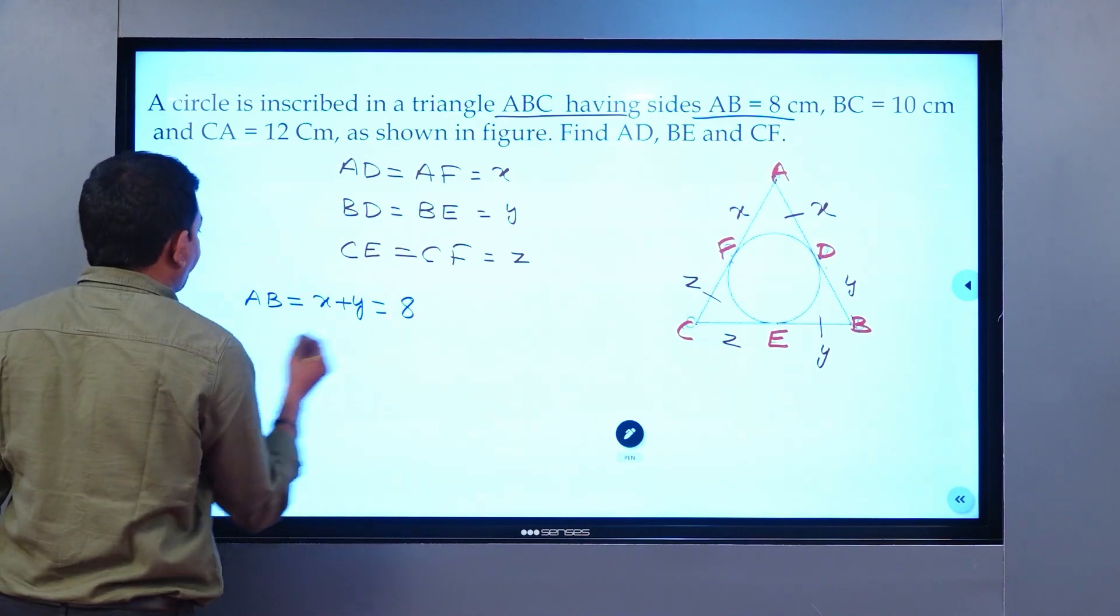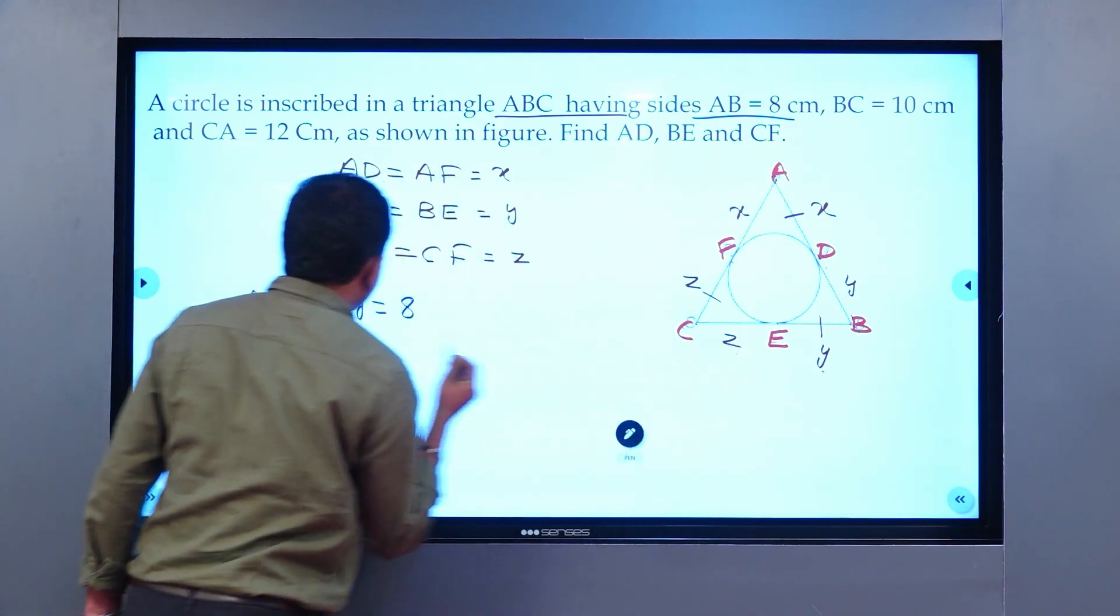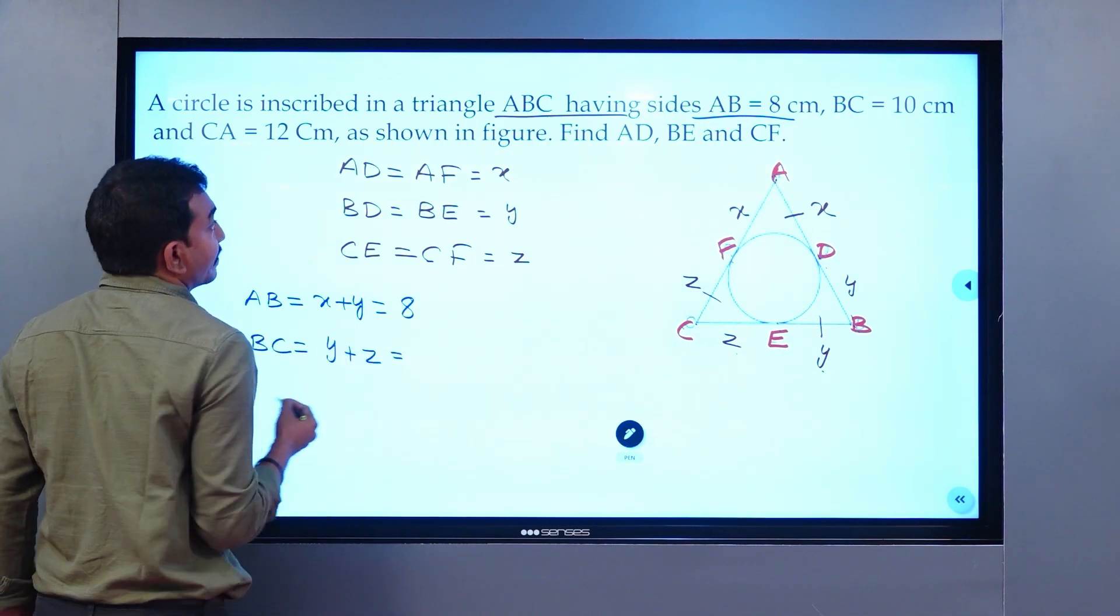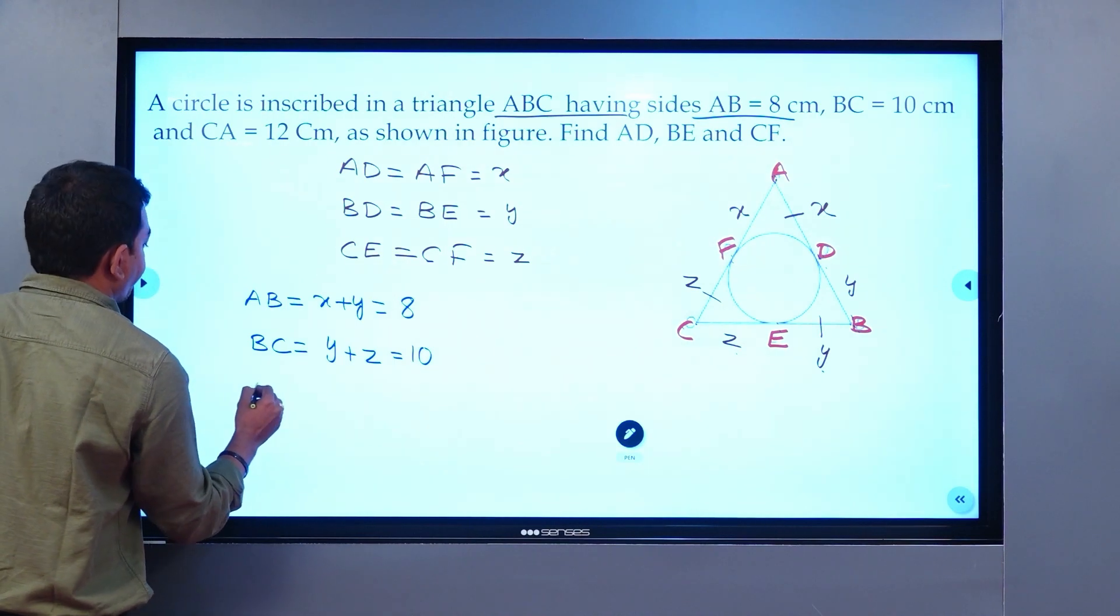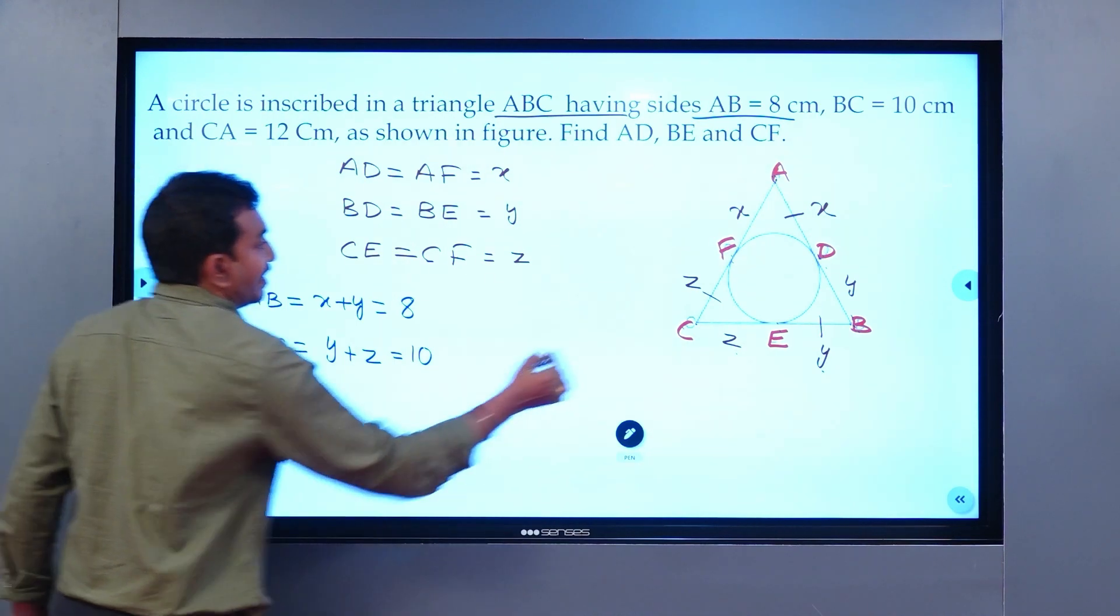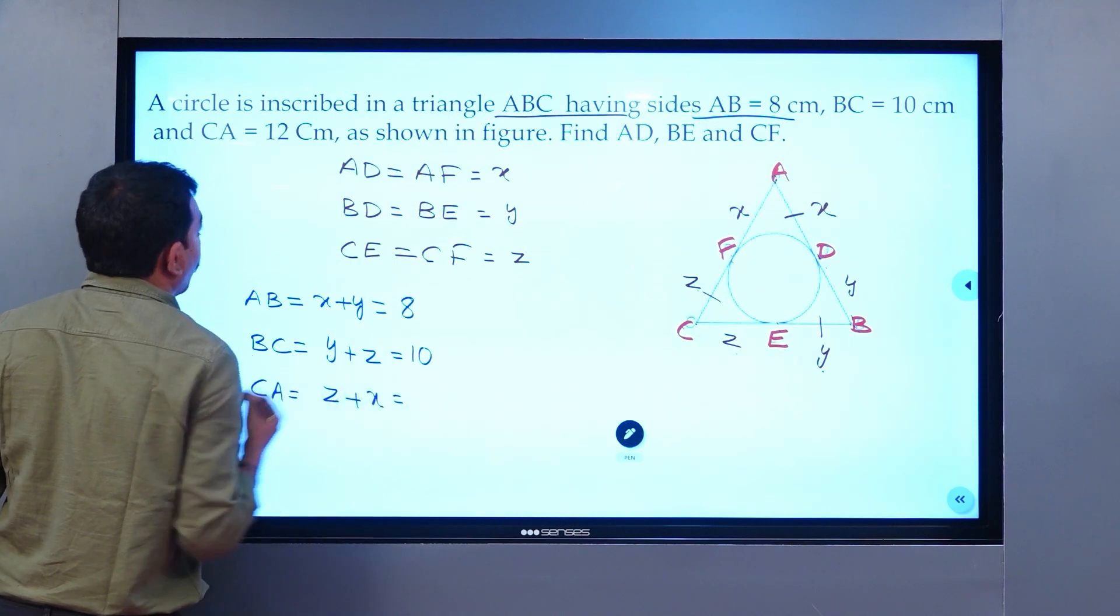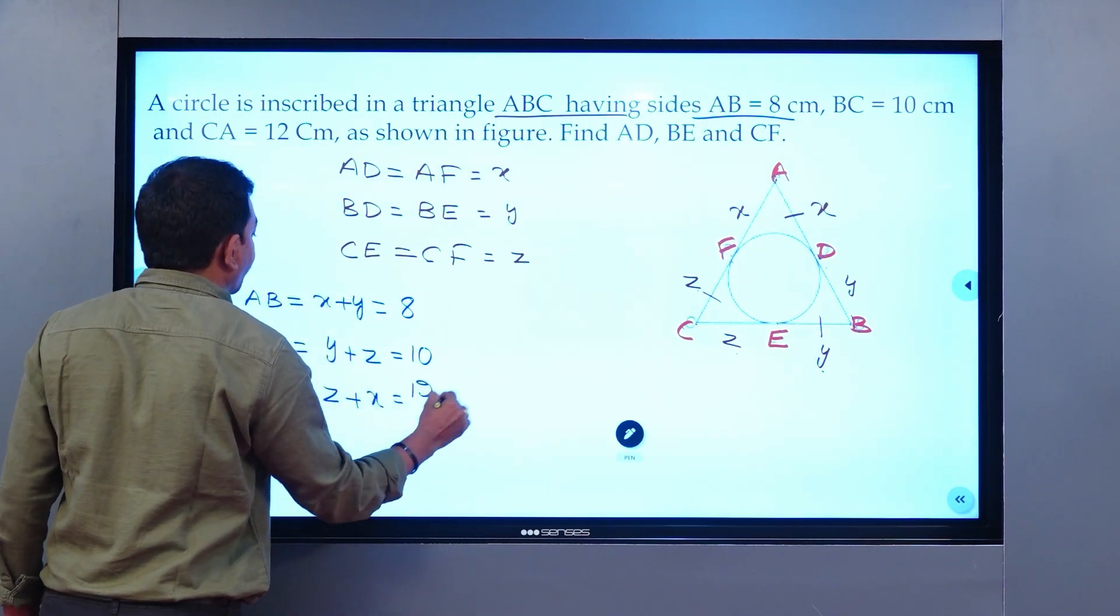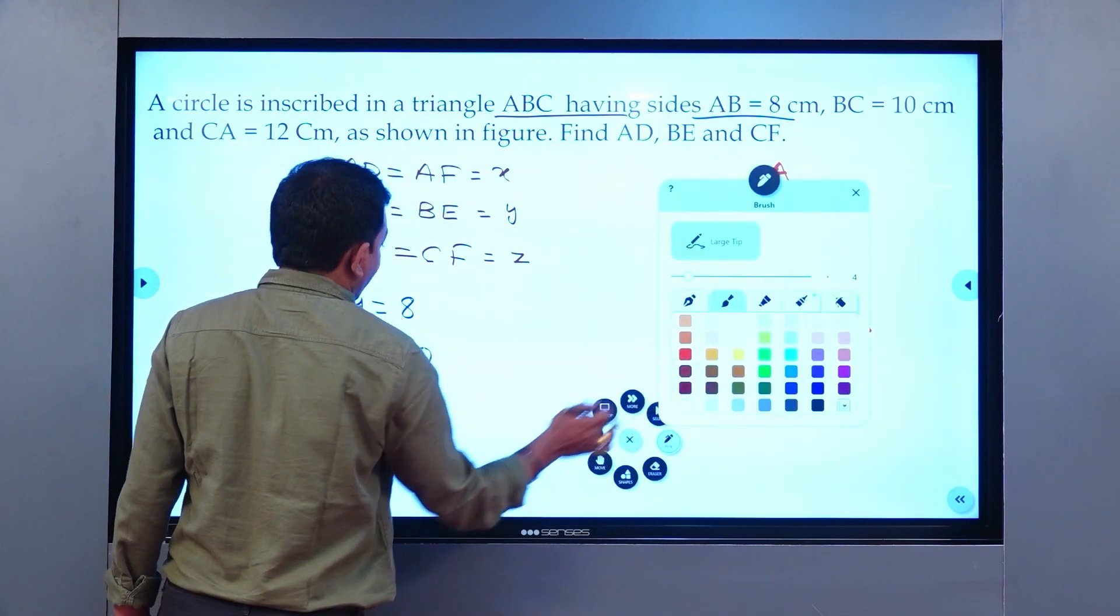Similarly, BC is Y plus Z. BC is 10. What about CA? CA is Z plus X, which is 12 centimeters. We have three simple linear equations.